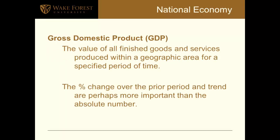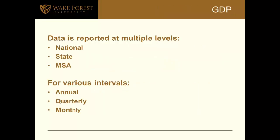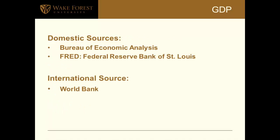Gross domestic product, usually referred to as GDP, is the value of all finished goods and services produced within a geographic area for a specified period of time. Rather than just the importance of a number, it's the percent change or the trend line that's really important. Data is reported at multiple levels — national, state, or metropolitan statistical area — and for different intervals such as annual, quarterly, or monthly. For the United States, some of your best sources will be the Bureau of Economic Analysis or FRED, the Federal Reserve Bank of St. Louis.